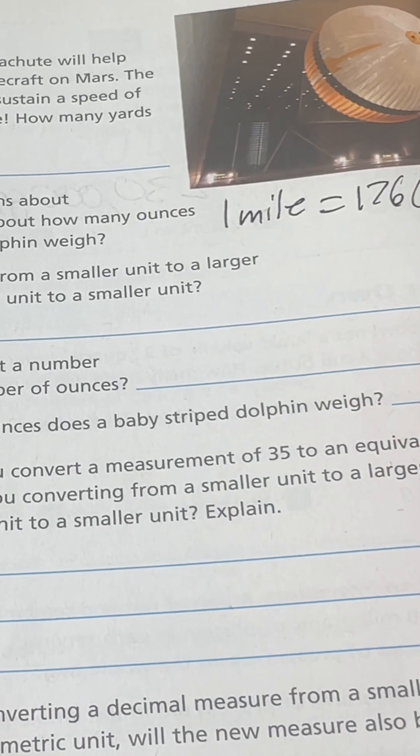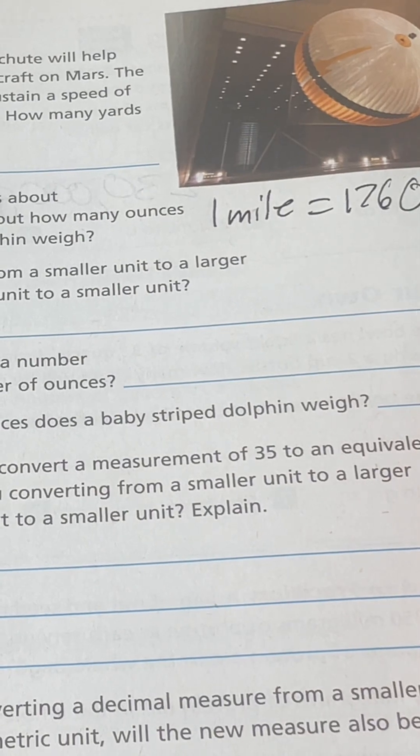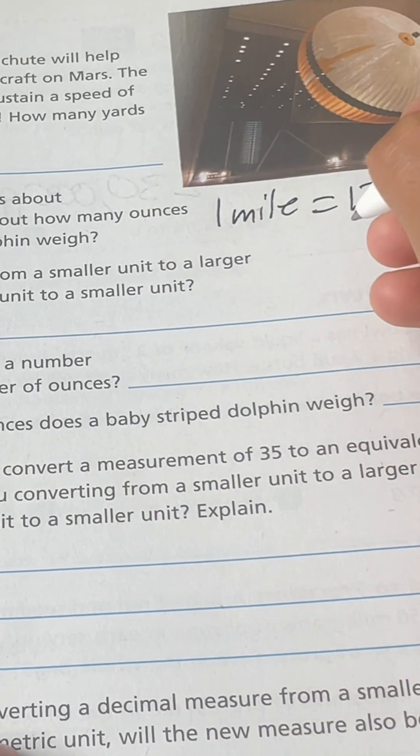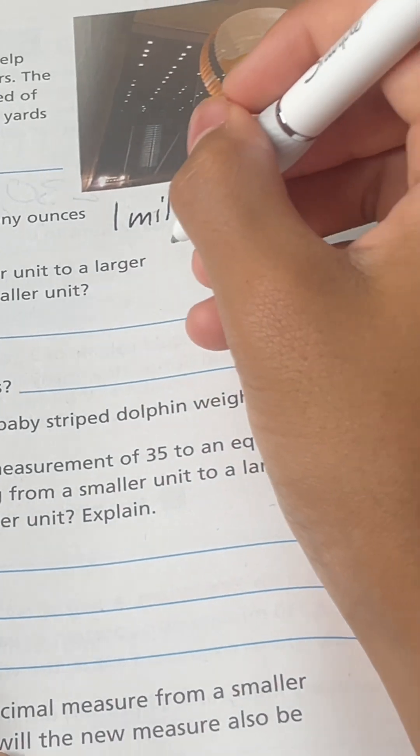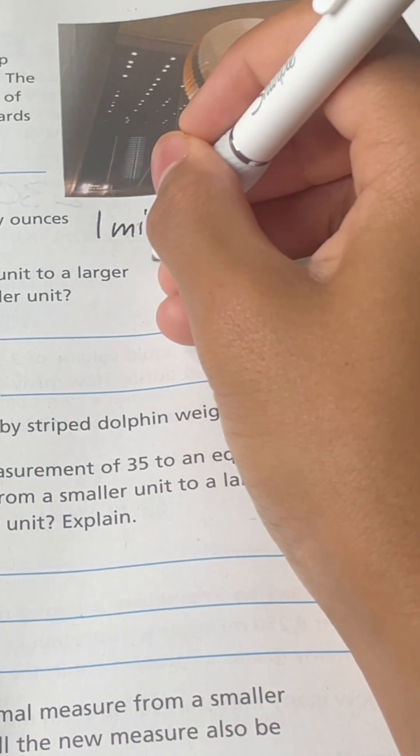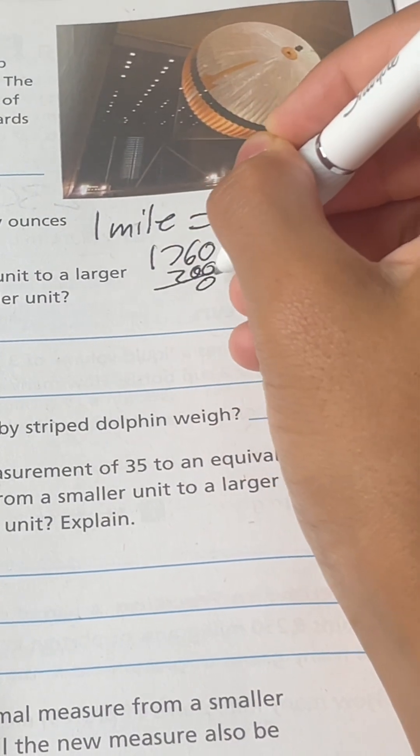So 1,760 times 200. 200 miles per minute. Okay.